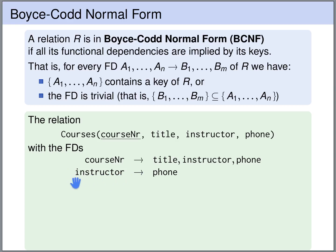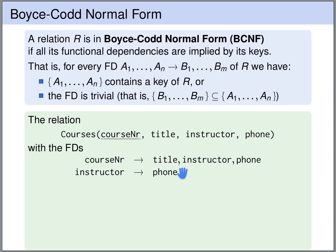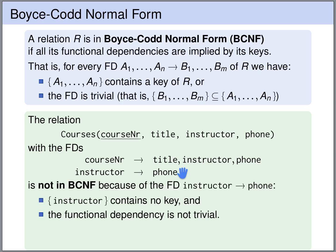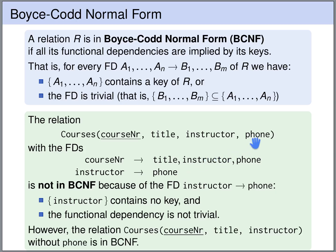If we take the set only containing instructor and compute the closure, we get instructor and phone, and nothing else. So this is not a key of this table. We are not in the first case; let's check whether we are in the second case. Is it a trivial functional dependency? The right-hand side is not a subset of the left-hand side, so it's also not trivial. So this is neither implied by a key nor trivial, so it violates the Boyce-Codd normal form. This table is not in Boyce-Codd normal form. However, if we drop the phone number from the table, then the resulting table is in Boyce-Codd normal form.